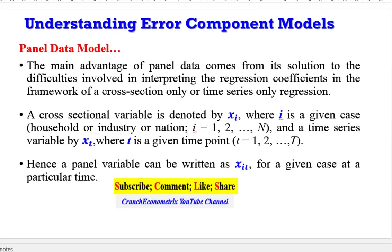The main advantage of panel data comes from a solution to the difficulties involved in interpreting the regression coefficients in the framework of either a cross-sectional-only sample or a time series-only sample or model. A cross-sectional variable by now you know is denoted by subscript i, while a time series is denoted by subscript t. Therefore, a panel data variable is given by subscript it for a given case at a particular time.